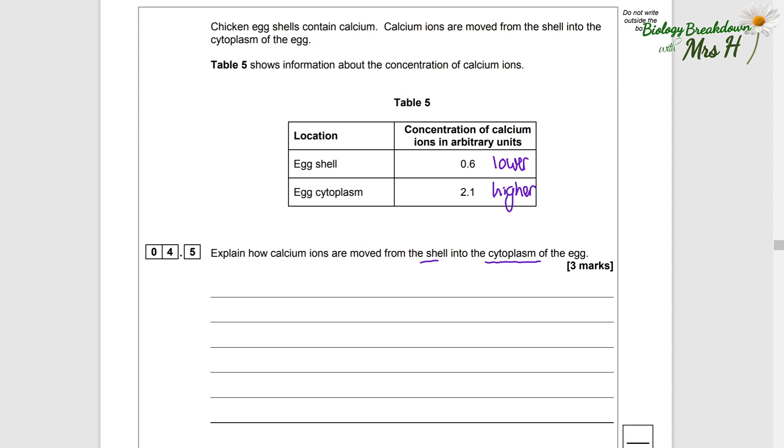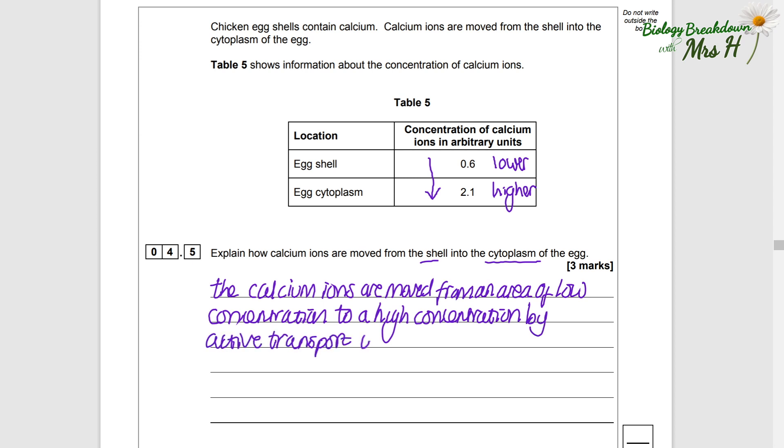4.5: Explain how calcium ions are moved from the shell into the cytoplasm of the egg. I think that can be a bit of a misleading question, but you just need to think: well, how do ions move? They either move by diffusion or active transport. So as we've established, they are a lower concentration in the shell compared to the cytoplasm. If they're moving into the cytoplasm, they're going to be moving from a low concentration to a higher concentration, so therefore active transport is needed. So the calcium ions are moved from an area of low concentration to a high concentration by active transport, which requires energy. We have all our lovely three marks in that answer.